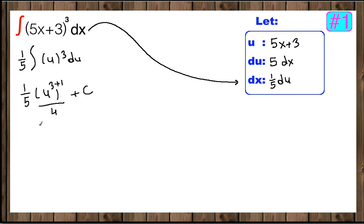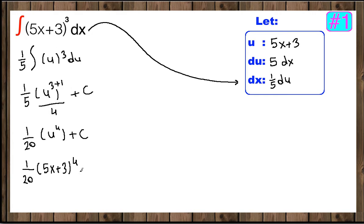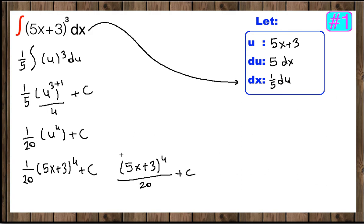Now let's rearrange. 5 times 4 is 20, giving us u to the 4th over 20 plus c. Bringing u back, u was 5x plus 3, so the answer is (5x plus 3) to the 4th power over 20 plus c. This is the final answer. You can write it in either form.